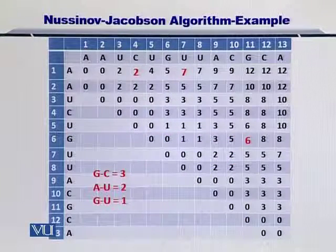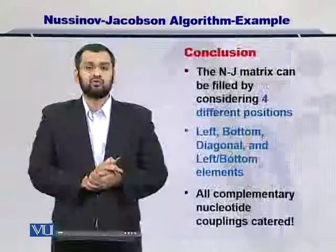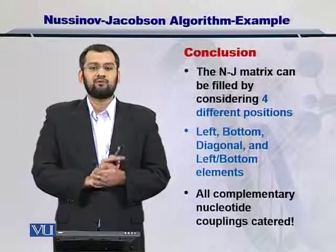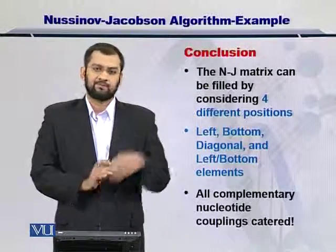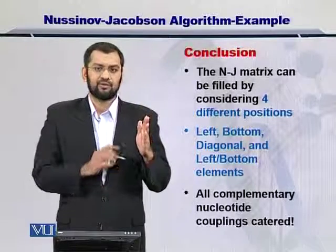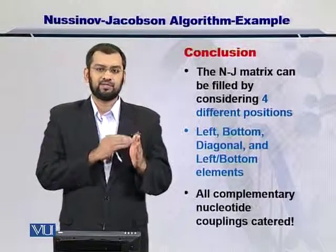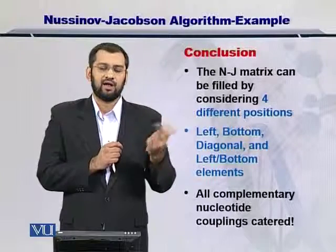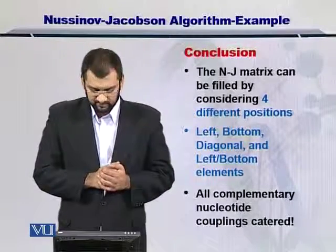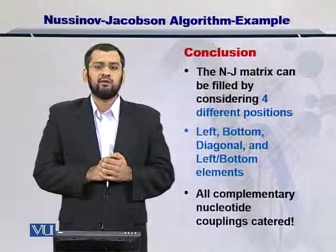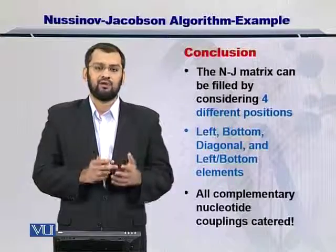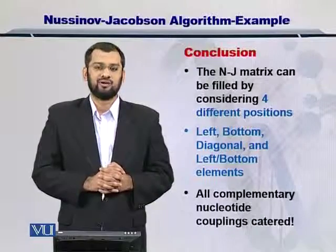Once you have filled up the entire matrix, you are ready for the next step. To summarize the filling of the matrix, you need to consider four different positions: the position at the left, the position at the bottom, the position in the diagonal, as well as the rows beyond the bottom and the left elements. In this way, you can cater for all the possible nucleotide couplings and therefore arrive at the scoring matrix.